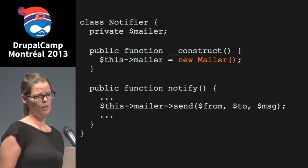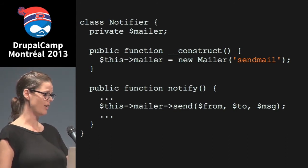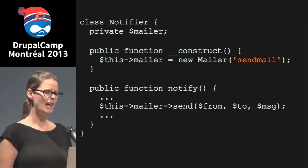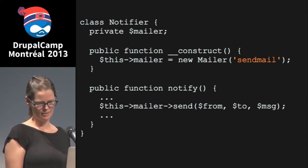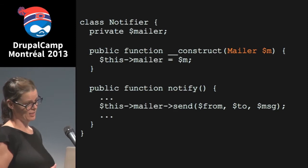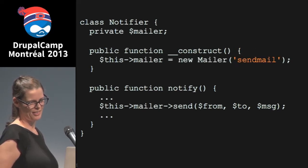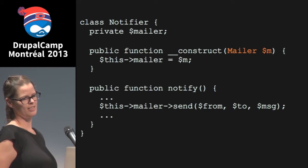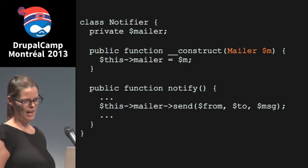That doesn't look too problematic, but what if the Mailer class has parameters that need to get passed in — like specifying a transport mechanism? All of a sudden this class is in the business of knowing how to instantiate this other class, which it really shouldn't be. In the improved version, rather than instantiating the Mailer class in the constructor, it's being passed in as a constructor parameter. That difference — instantiating inside versus passing in as a constructor parameter — that's dependency injection. That's all there is to it in its simplest form.